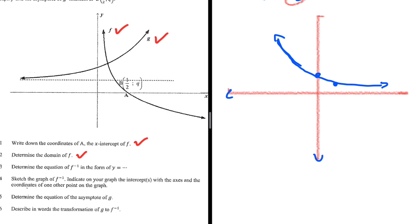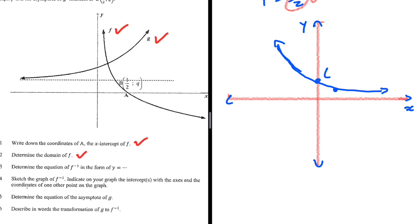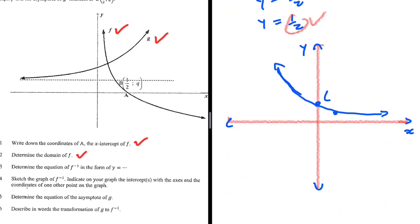Let's be a bit more formal. This is x and this is y. The y-intercept is at coordinates (0, 1), and the other point is at coordinates (1, one half).